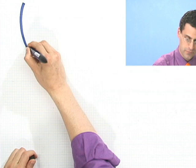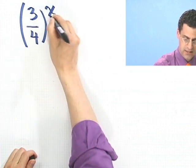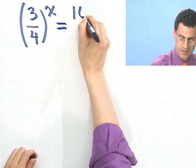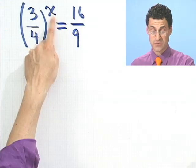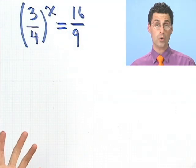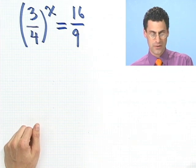So let's start off with a very simple example, just to get us in the right mood. So this would be 3/4 to the x, and suppose that equals 16/9. Now what I want to do is figure out what value of x would make this thing actually hold. Well, there's a variety of ways of thinking about it. Let me share a couple with you.